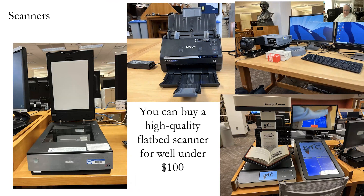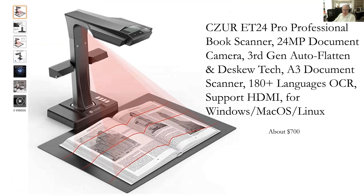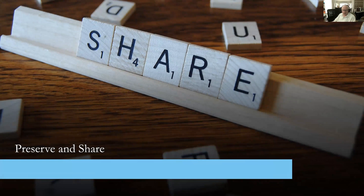Another option is the CZUR professional book scanner — a 24-megapixel camera device that does a marvelous job of flattening pages, available for about $700. If you're going to do lots and lots of scanning, you may find this is tremendously faster than other options. The whole key is to preserve the information and put it into a format that can be shared with the family, so that photos aren't locked up in boxes, trunks, and closets around the world. We want to be in the preservation and sharing business.